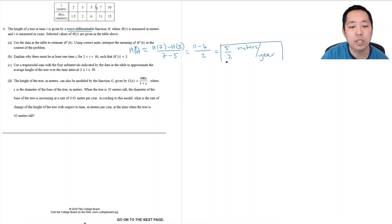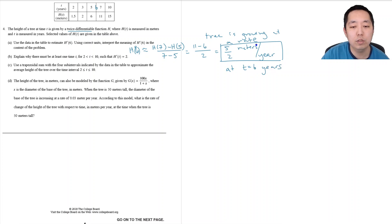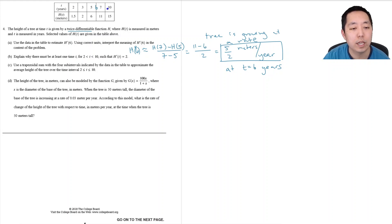The interpretation of this number is that h of t is growing — the tree is growing at that rate at t equals 6 years. So when it's 6 years old, it's growing that fast. Next: explain why there must be at least one time t between 2 and 10 such that h prime of t is equal to 2.